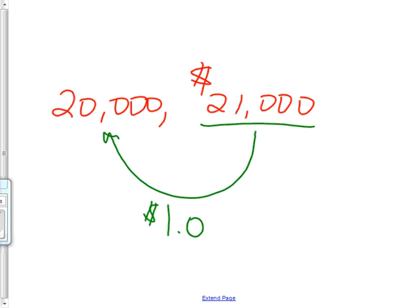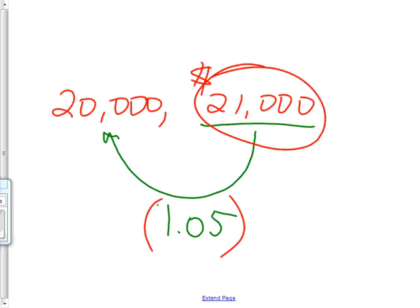How much? 1.05. So the car went up in value 5%. Do you get what I'm saying? And you take the bigger one divided by the smaller one to tell what that increase was.